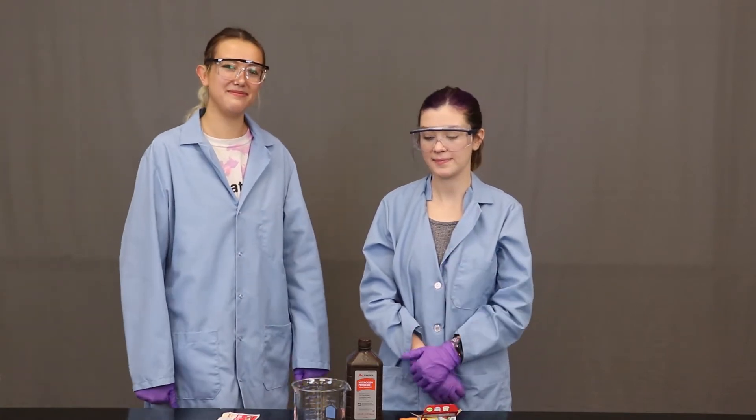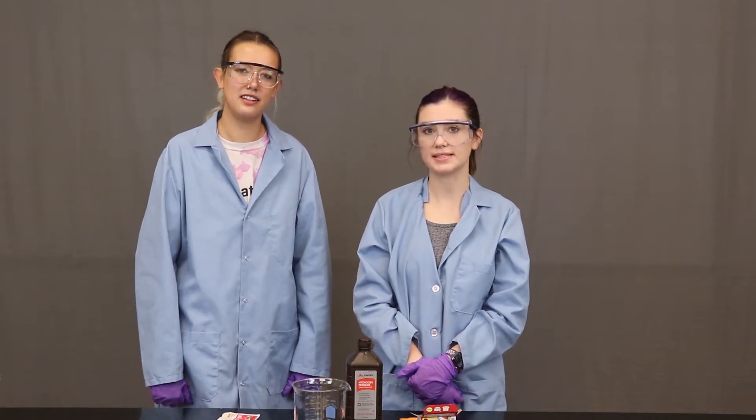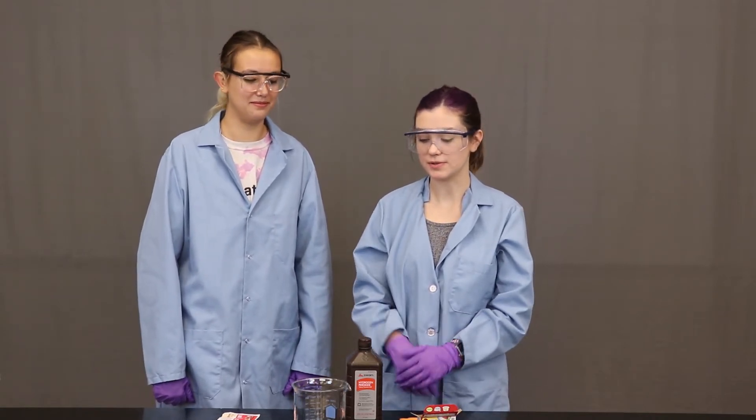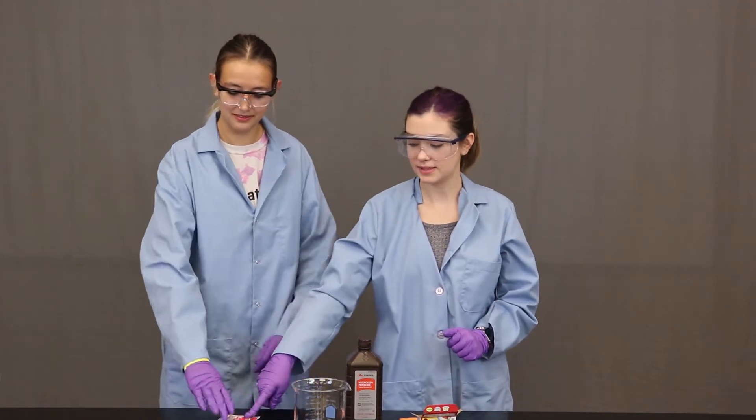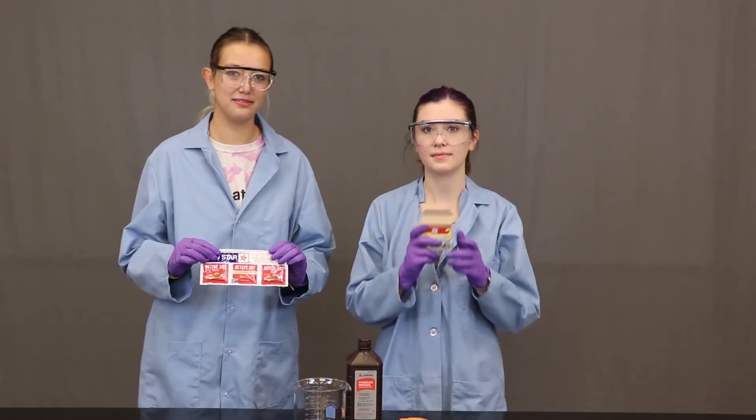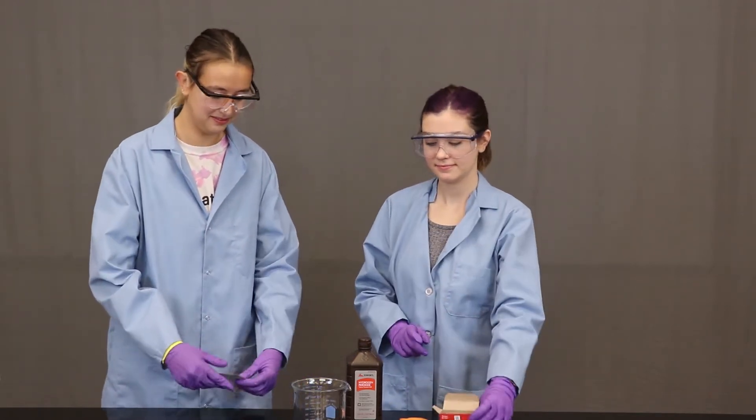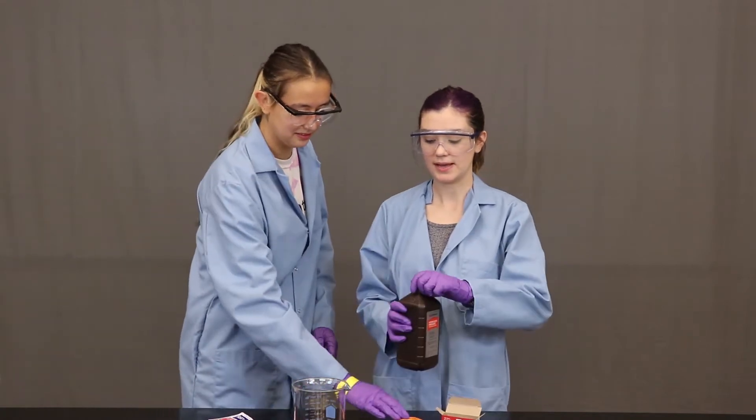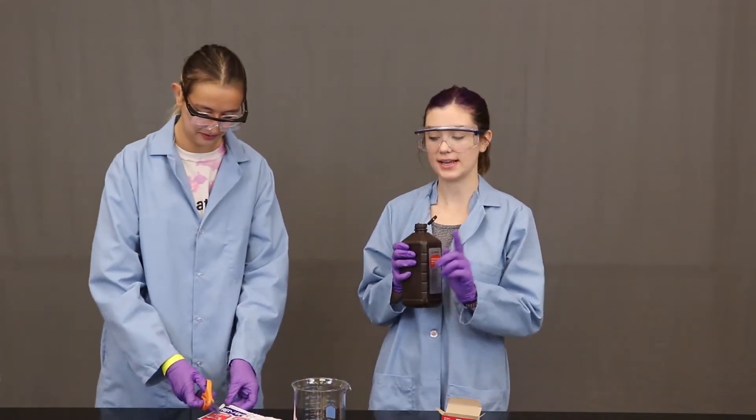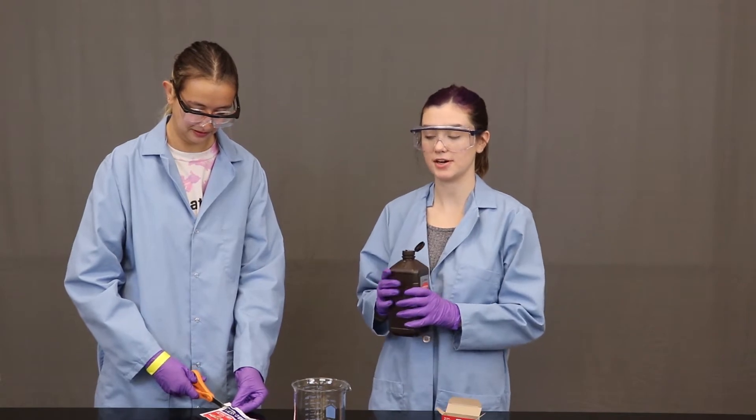Stay safe! Today we're going to be doing an elephant toothpaste experiment where we use hydrogen peroxide, yeast, and food dye. First we begin by pouring our hydrogen peroxide into a safe container. Today we're using a beaker.